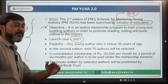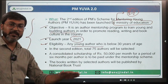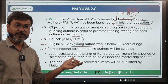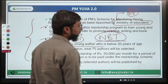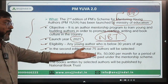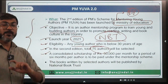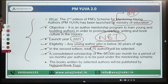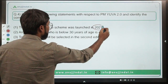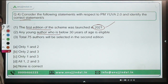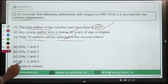Any young author below 30 years of age is eligible. In this second edition, 75 authors will be selected and provided mentorship by the National Book Trust (NBT). A scholarship of Rs. 50,000 per month will be provided for six months, and the books written by these 75 authors will be published by the National Book Trust. The correct answer is option C — all three statements are correct.